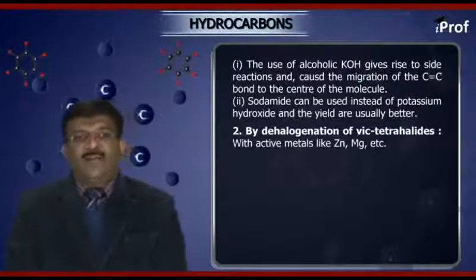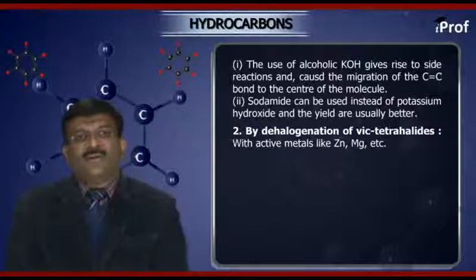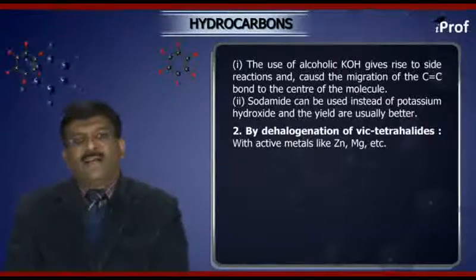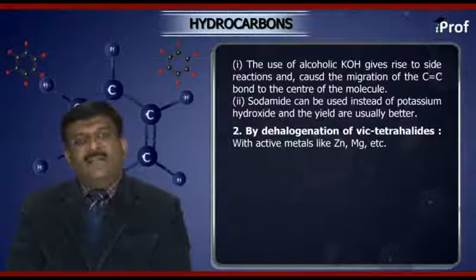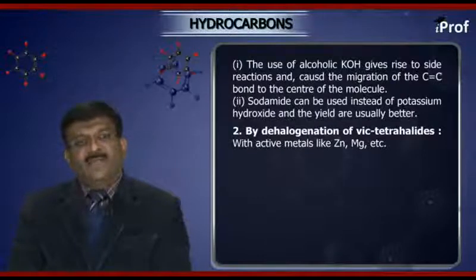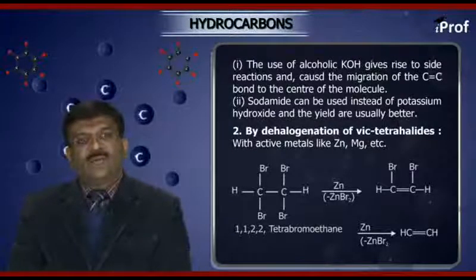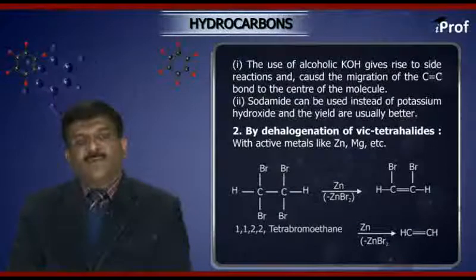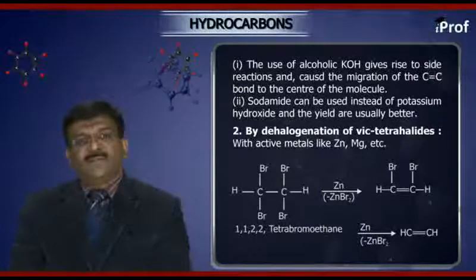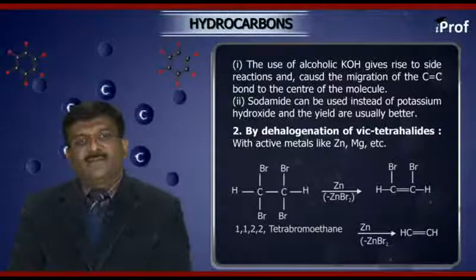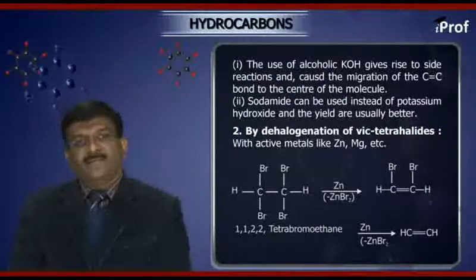Next, by dehydrohalogenation of vic tetrahalides. Reaction with active metals like zinc, magnesium, etc.: 1,1,2,2-tetrabromoethane gives the corresponding bromoalkenes, which on further reaction with zinc gives the corresponding acetylene.